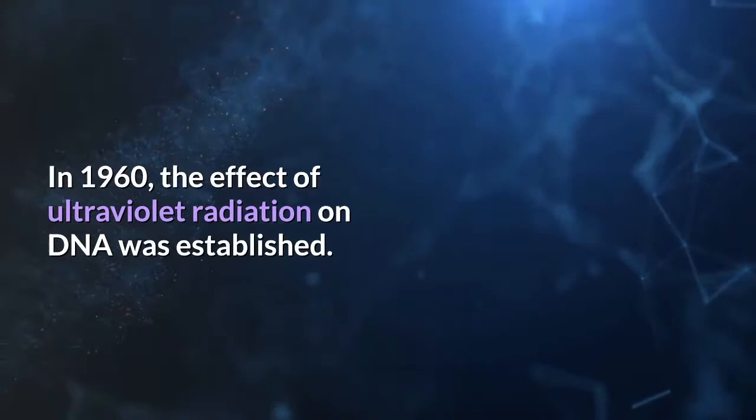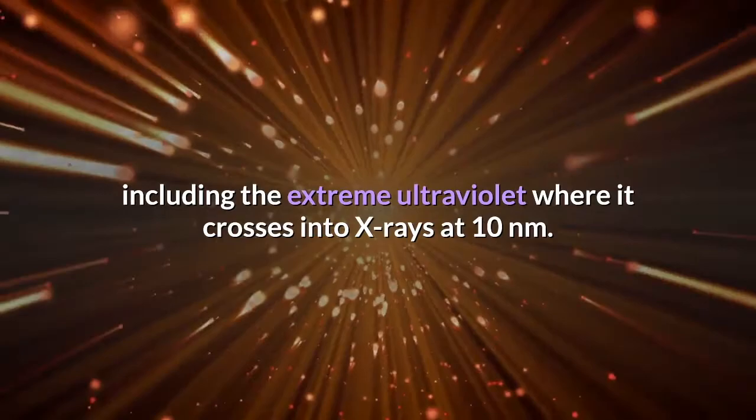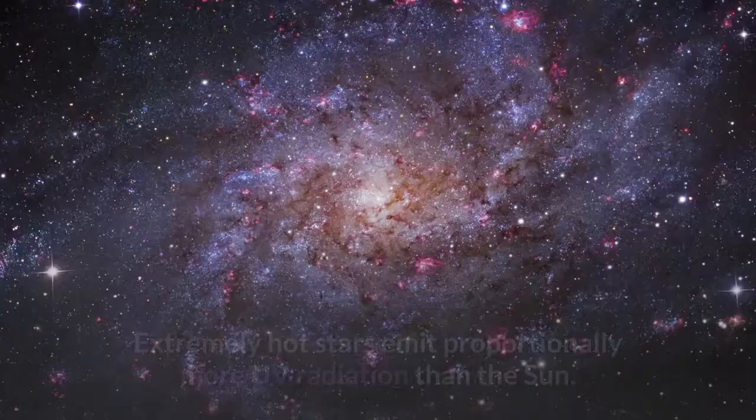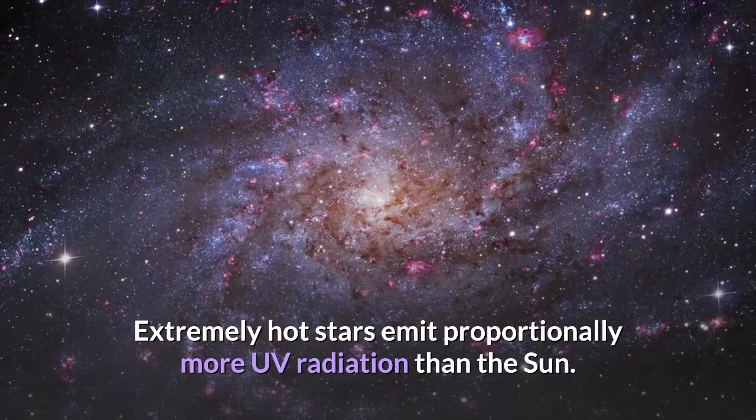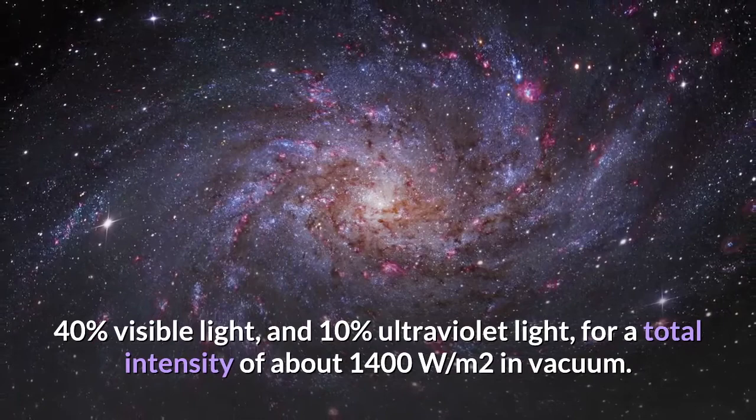Very hot objects emit UV radiation. The sun emits ultraviolet radiation at all wavelengths, including the extreme ultraviolet where it crosses into X-rays at 10 nanometers. Extremely hot stars emit proportionally more UV radiation than the sun. Sunlight in space at the top of Earth's atmosphere is composed of about 50% infrared light, 40% visible light, and 10% ultraviolet light, for a total intensity of about 1400 W/m² in vacuum. The atmosphere blocks about 77% of the sun's UV when the sun is highest in the sky, with absorption increasing at shorter UV wavelengths.